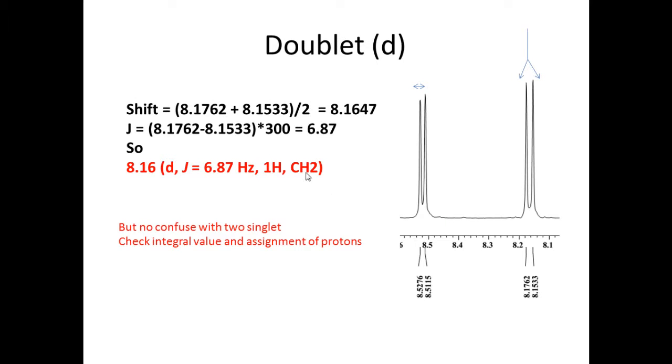So this is 6.87 doublet, 1H and CH2 protons, but not confuse two singlet. It may be two singlet, so please be careful about these number of protons and your assignment using the chemical shift. It should not be confused with two singlets. Sometimes two singlets come close together. Check the integral and assignment of the proton for this confirmation, not two singlet.